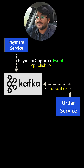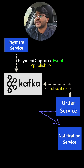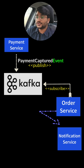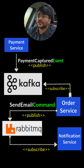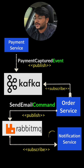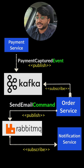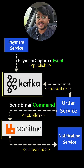Now the order service needs to give a command to the communication service or notification service — the order has been booked, so send an invoice to the customer. For that, the order service can publish a command to RabbitMQ, another message broker. The notification service consumes this command and sends the invoice email to the customer. In this enterprise-level architecture, Kafka is used to store events and RabbitMQ is used to store commands.